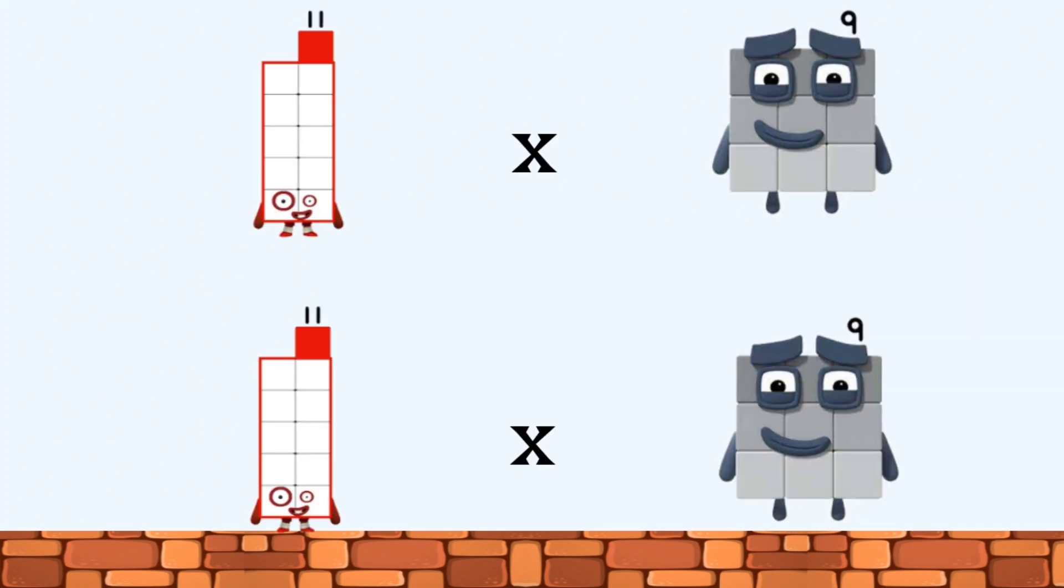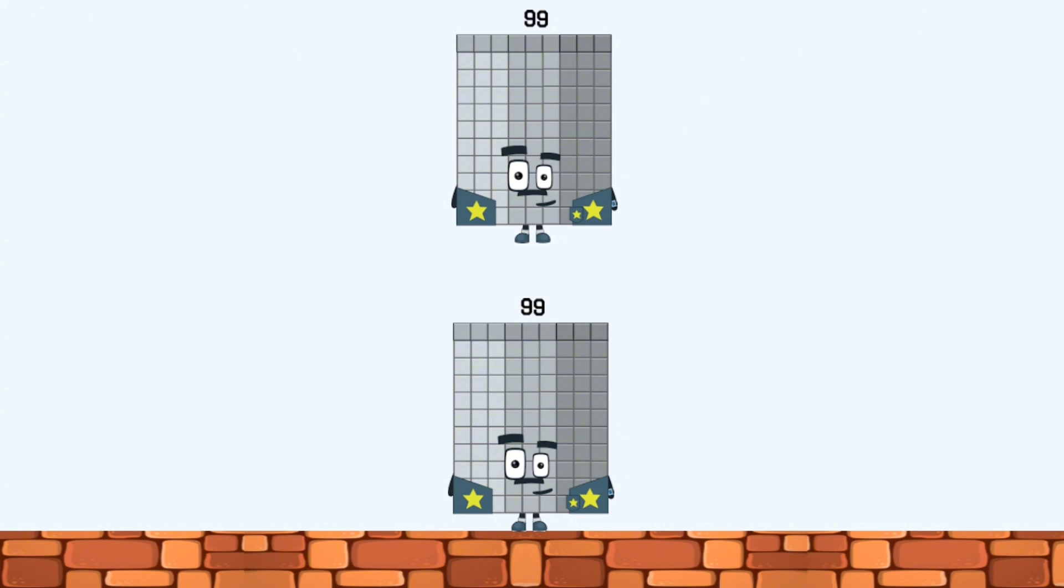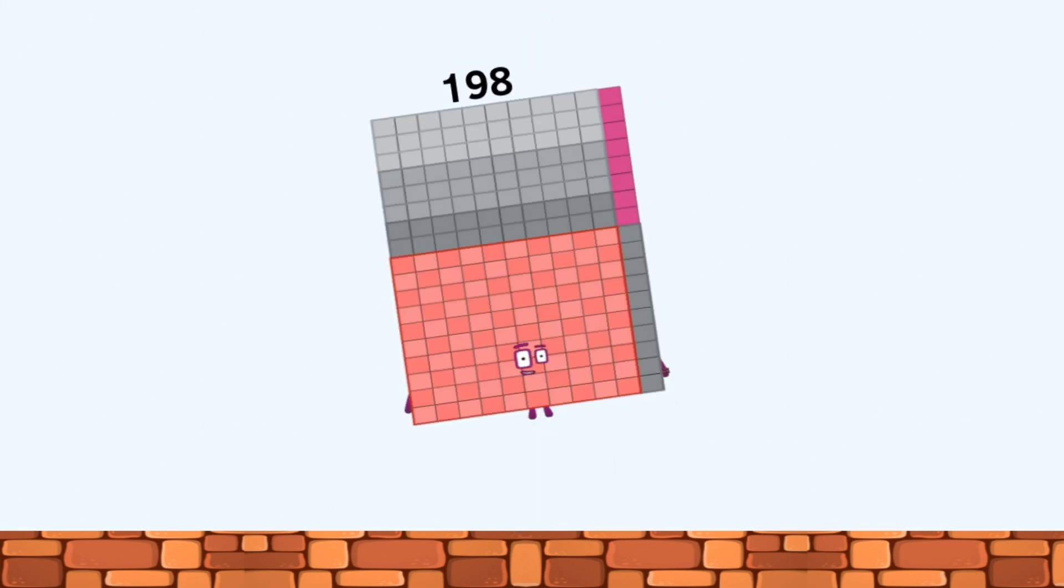11 times 9 equals 99. 99 plus 99 equals 198.